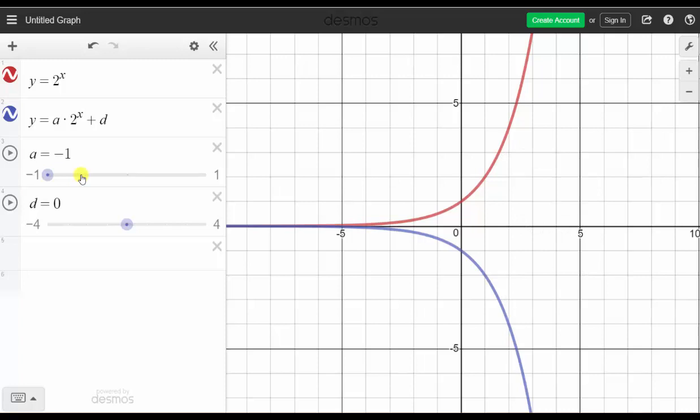And now if we change d to negative 1, notice how the blue graph is shifted down 1 unit. This is the graph of y equals the opposite of 2 to the power of x minus 1, which is the function we want to consider.